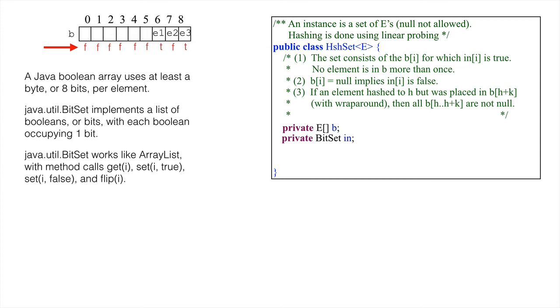Finally, this is not part of the invariant, but just a reminder: to remove b[i] from the set, set in[i] to false. We also need a field to contain the size of the set and a field load, which contains the number of b[i] that are not null. If elements are removed, load is greater than size. We'll see how load is used later.